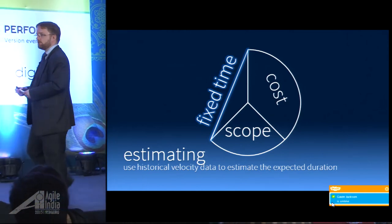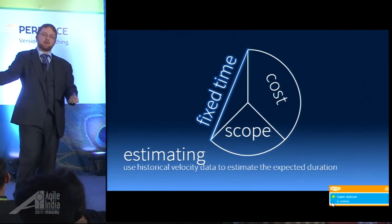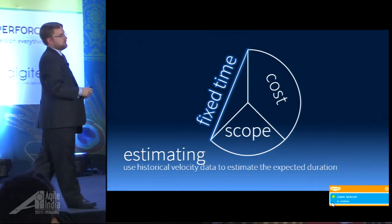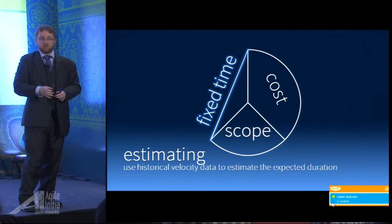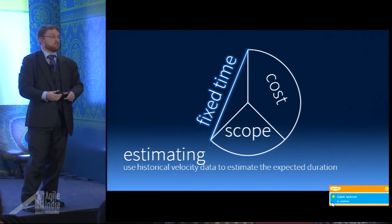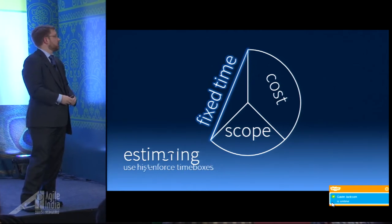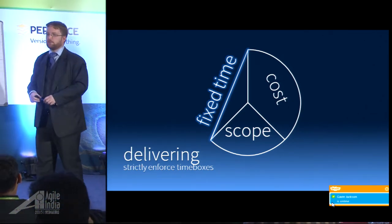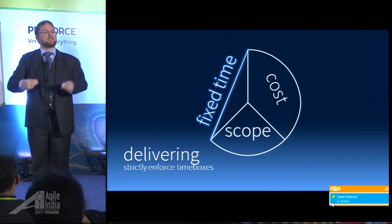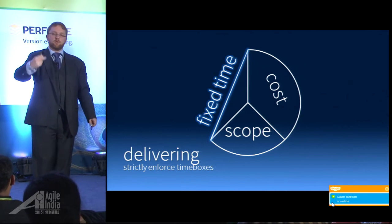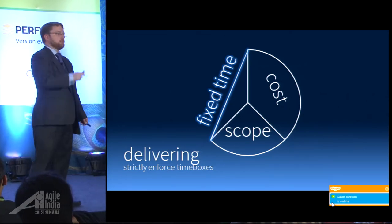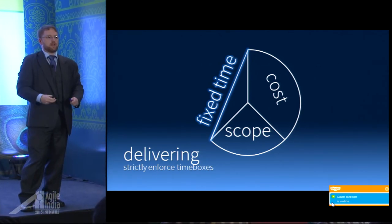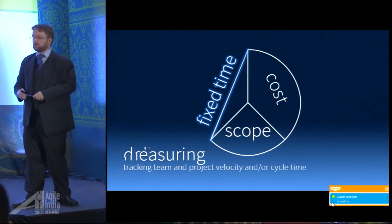If it's a new team, or the team is fundamentally changed — you pull out three members and put another three in — you do not have historical velocity data. At that point you just take a guess, because you've got nothing else to go on. Where it is fixed time, make sure you strictly enforce time boxes; don't let any sprint overrun. The more things that are fixed, the more agile you need to be. The more you deviate from good agile practices, the harder it will be to maintain.